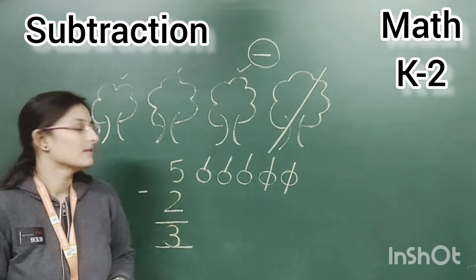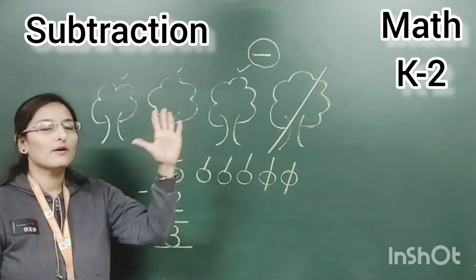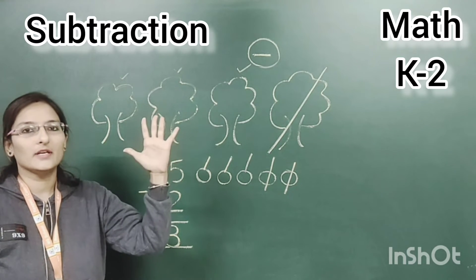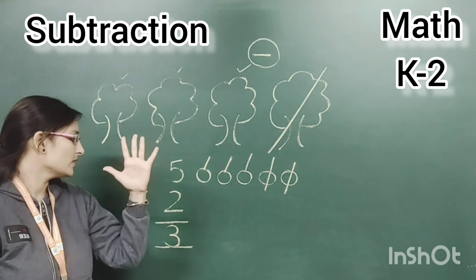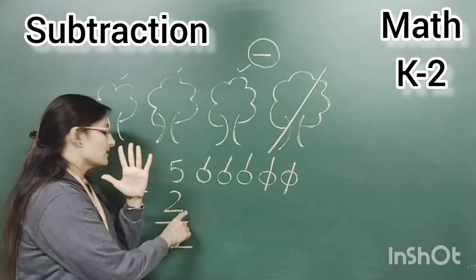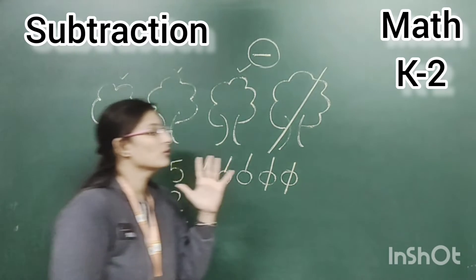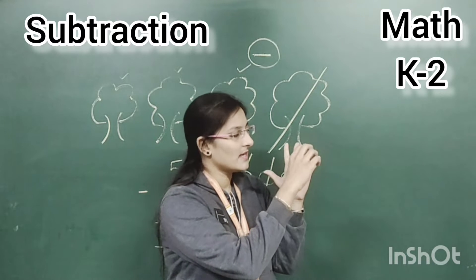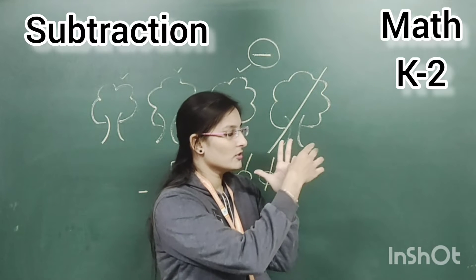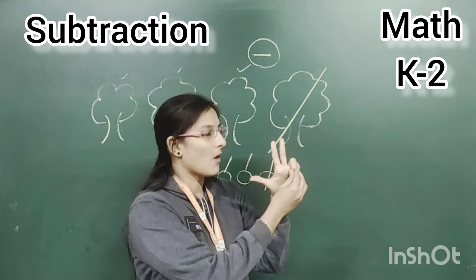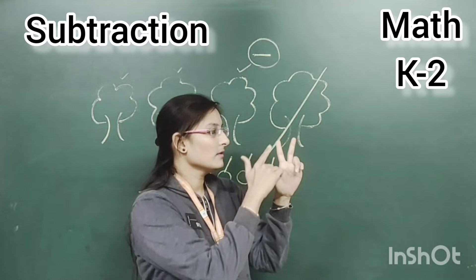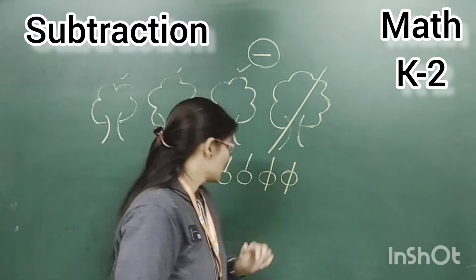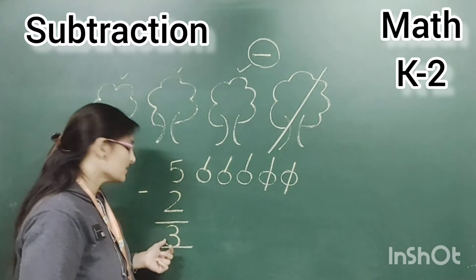We have many methods to solve this sum. Let's take the next example with fingers. The first given number is five fingers. We have to deduct how many fingers from that? Two. So we will bend those fingers: one, two. Now observe — how many are remaining? One, two, three. How many are remaining? Three. So the answer is three.